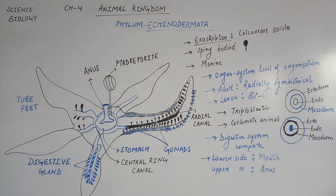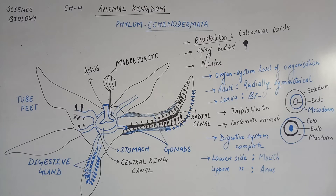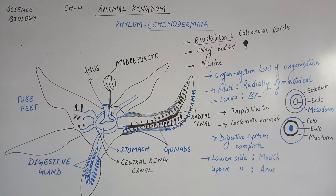Phylum Echinodermata में आने वाले Organisms marine होते हैं, मतलब Sea Water में रहते हैं, और इनका Level of Organization Organ System तक का होता है. बहुत सारे Cells मिलकर Tissue बनाते हैं, Tissues मिलकर Organs बनाते हैं और Organs Collectively Organ System बनाते हैं. इससे पहले हमने जो Phylum पढ़े थे उनमें Organ Level तक का Organization था, Platyhelminthes तक. उसके पहले Tissue Level था और Porifera में Cellular Level of Organization था. लेकिन Aschelminthes से जितने भी Phylum पढ़े, सब में Organ System Level of Organization था.